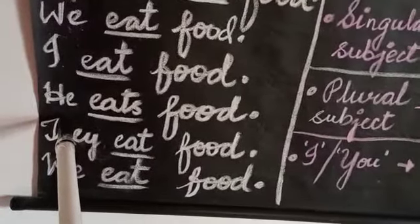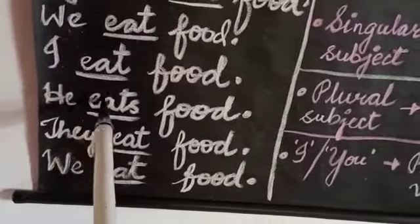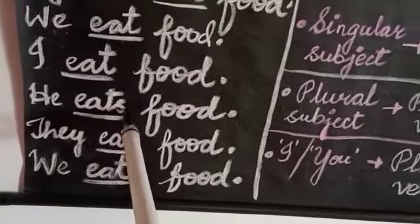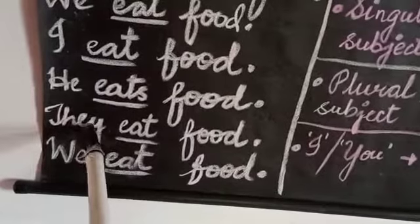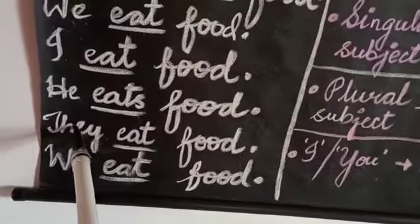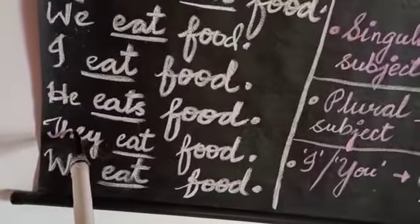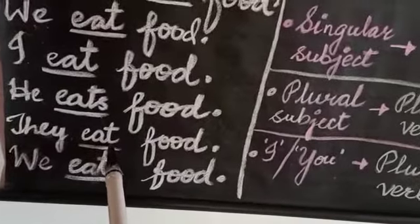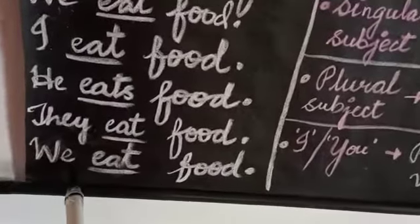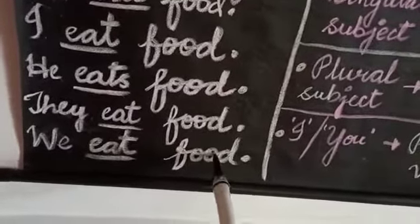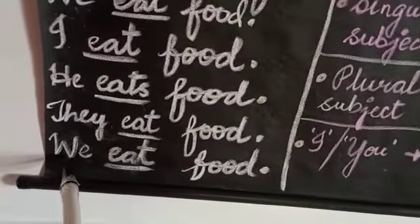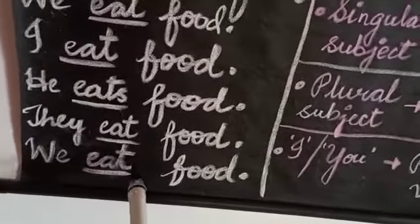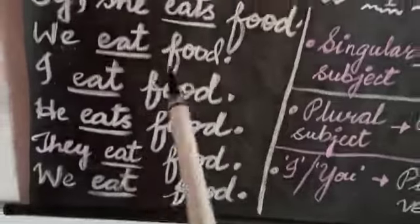'He eats food' — 'he' stands for a singular male, so it is a singular subject, and we use 'eats', a singular verb. 'They eat food' — 'they' is used for many people, a plural subject, so we use 'eat', a plural verb not ending in 's', 'es', or 'ies'. 'We eat food' — 'we' is also plural, so again we use the plural verb 'eat'.